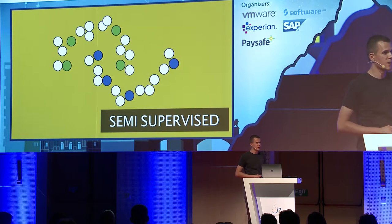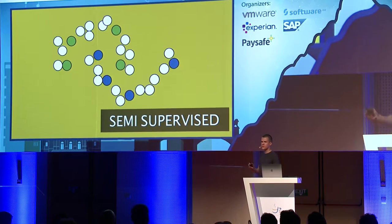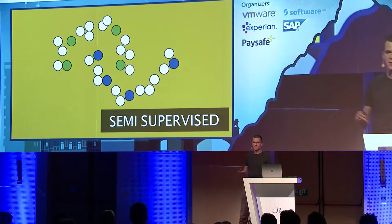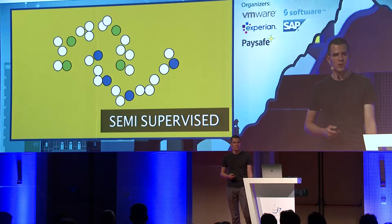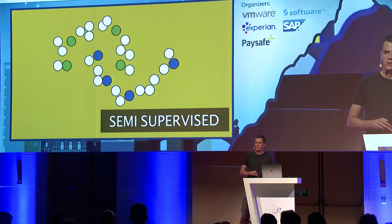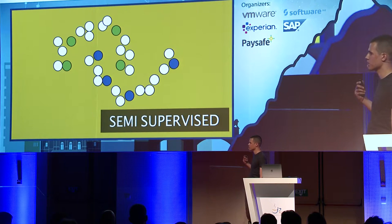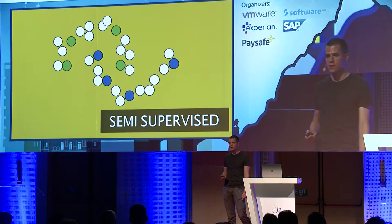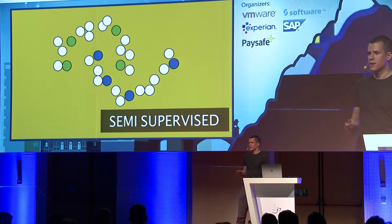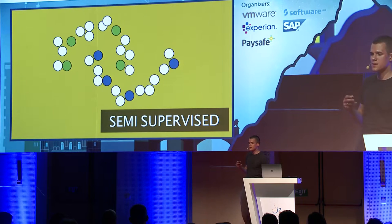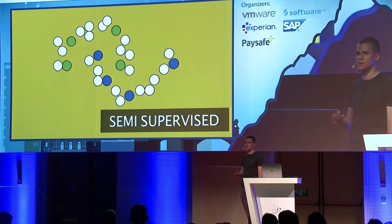The third big group is semi-supervised learning. It's somewhere between supervised and unsupervised. Basically, you have labels but only for a subset. Why a subset? Because it might be expensive to get labels — it might require humans to manually assign them. So you have only a small number of labels, but they can still benefit the whole processing.